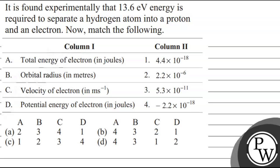Hello, let's read the question. It is found experimentally that 13.6 electron volt is the energy required to separate a hydrogen atom into a proton and an electron. Now match the following: Column 1 and Column 2.